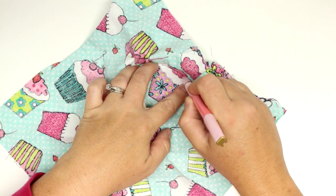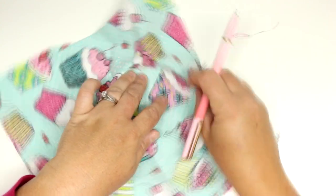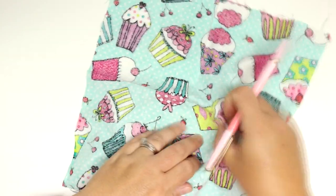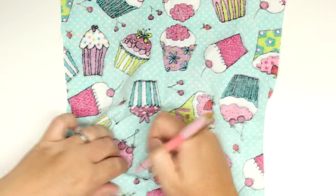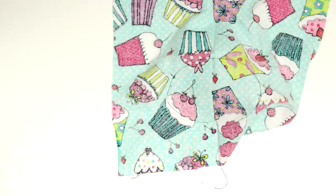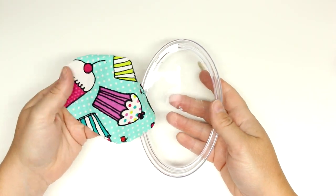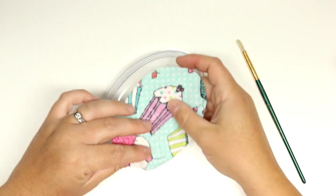Now because I chose a clear soap dish, I don't really want to see the magnets underneath it. So I'm just going to take some scrap fabric, cut out a shape that fits the underside of the soap dish.